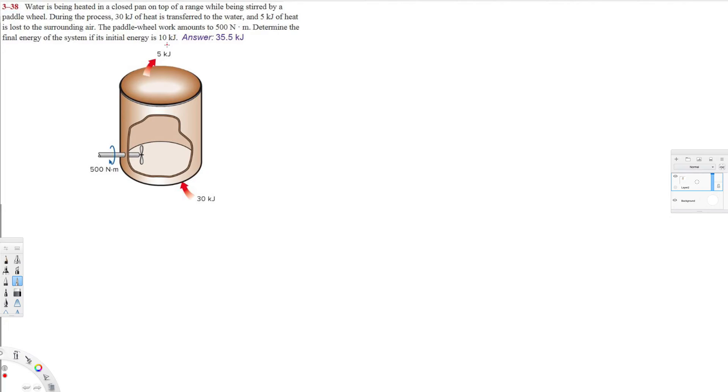Determine the final energy of the system if the initial energy is 10 kilojoules. So let's see how we can do this, but before we approach this question we have to know these three things. When we add heat, add heat is positive.